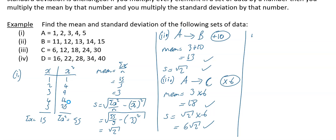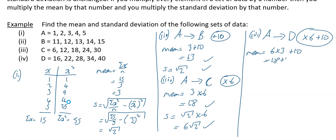Part 4 is a little trickier. To get from A to D you go from 1 to 16, so you multiply by 6 and then add 10. The new mean is 6 times 3 plus 10, which is 18 plus 10 = 28. For the standard deviation — and this is where a lot of people go wrong — adding 10 doesn't affect the standard deviation, so you only apply the multiplication: 6 times root 2 = 6 root 2.